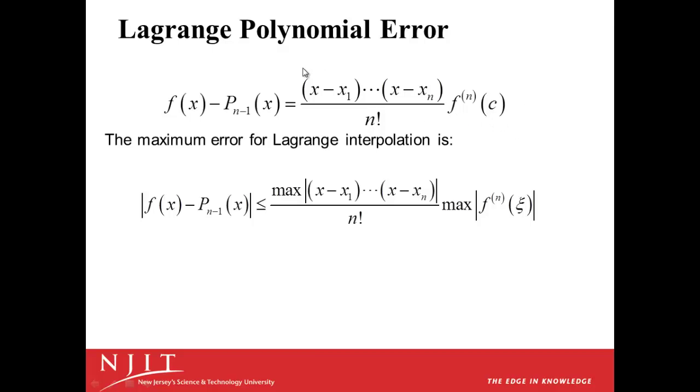And if we want to know what is the maximum value of the error, then we just take the maximum of the right-hand side. We find what is the maximum of this numerator, the n factorial we cannot change, and we find the maximum value of the nth derivative on the interval. And that gives us an upper bound for the error at any point when we're performing this kind of interpolation.